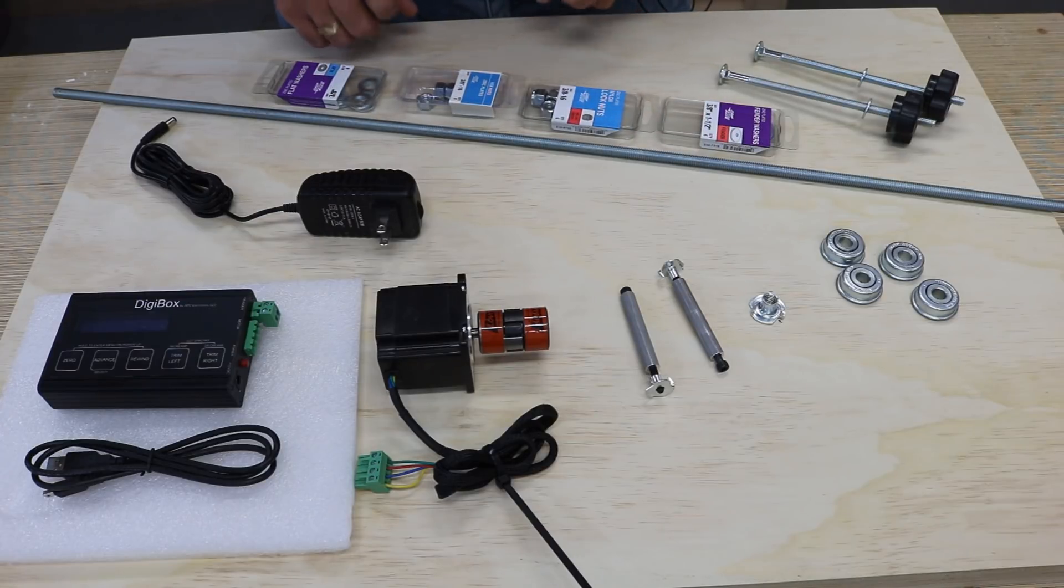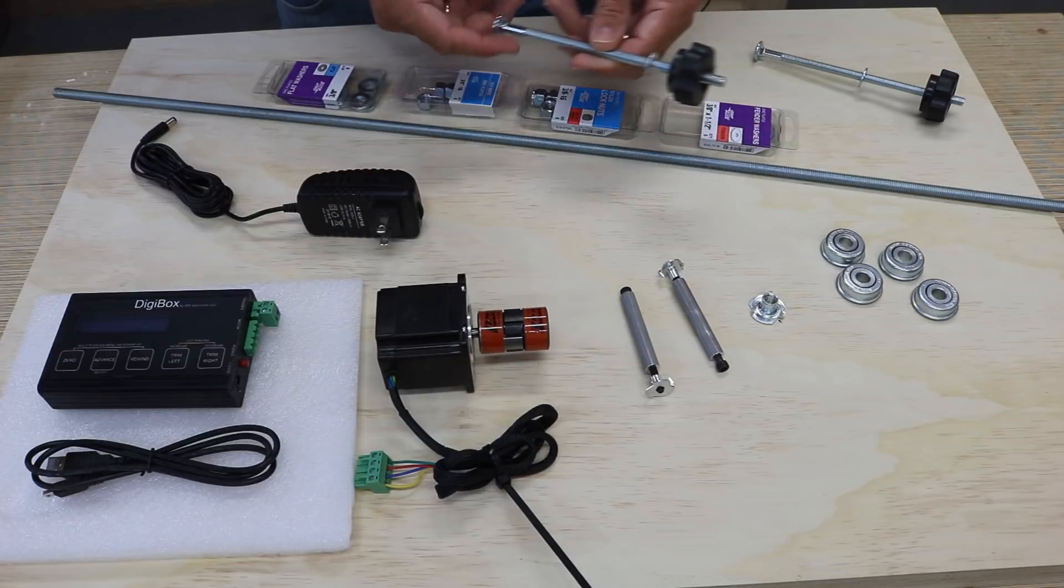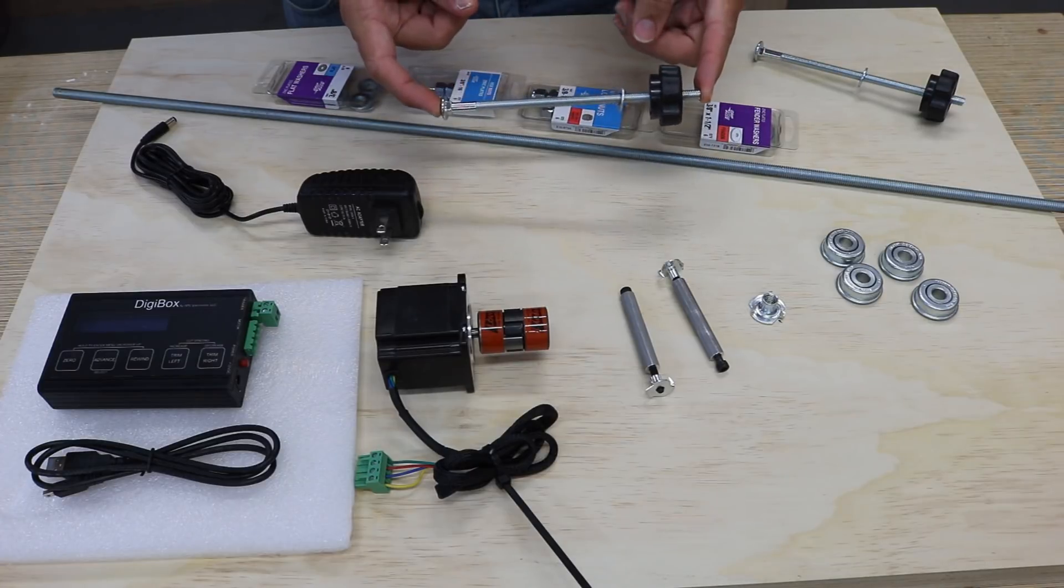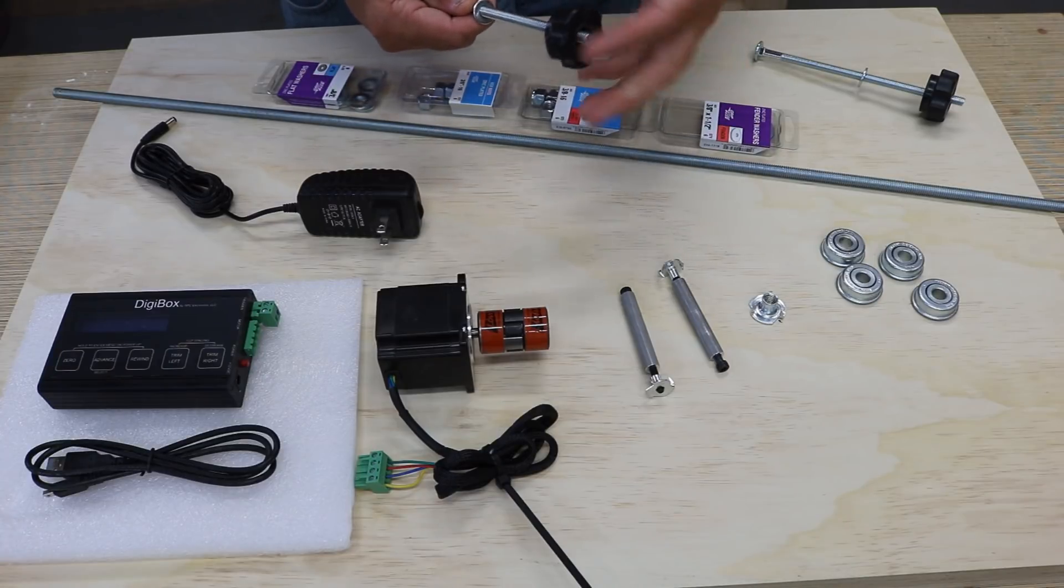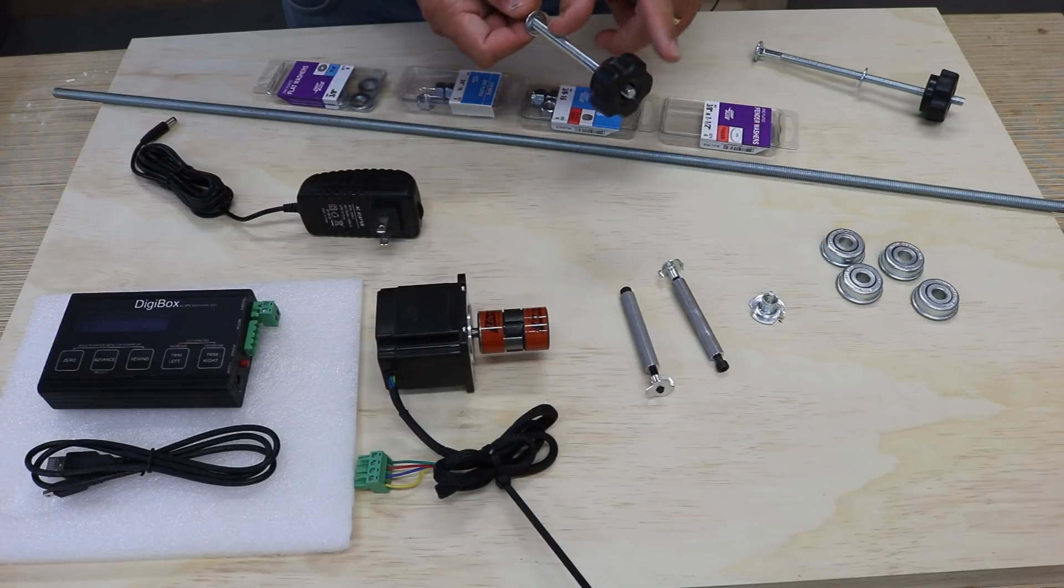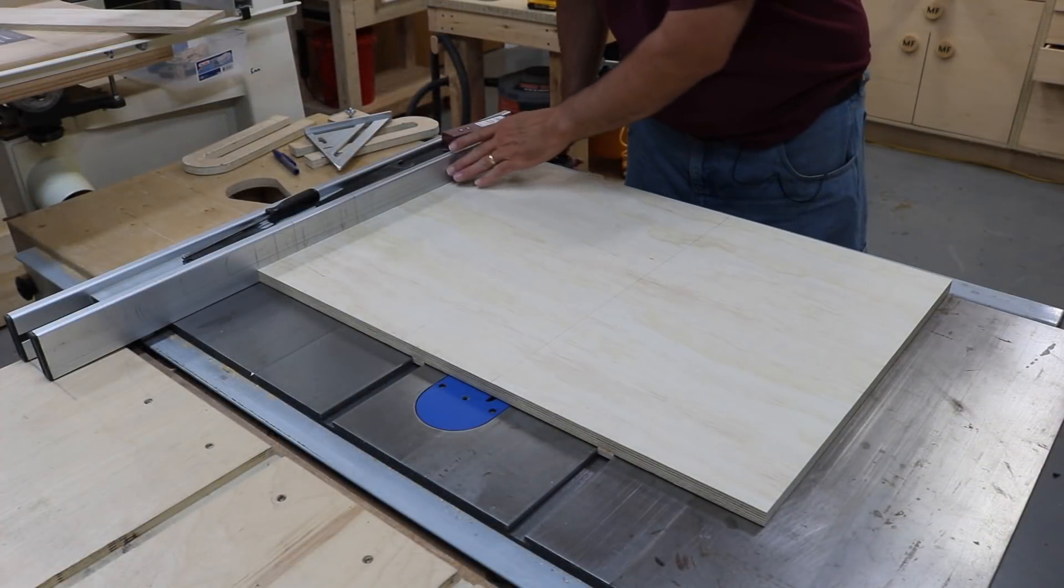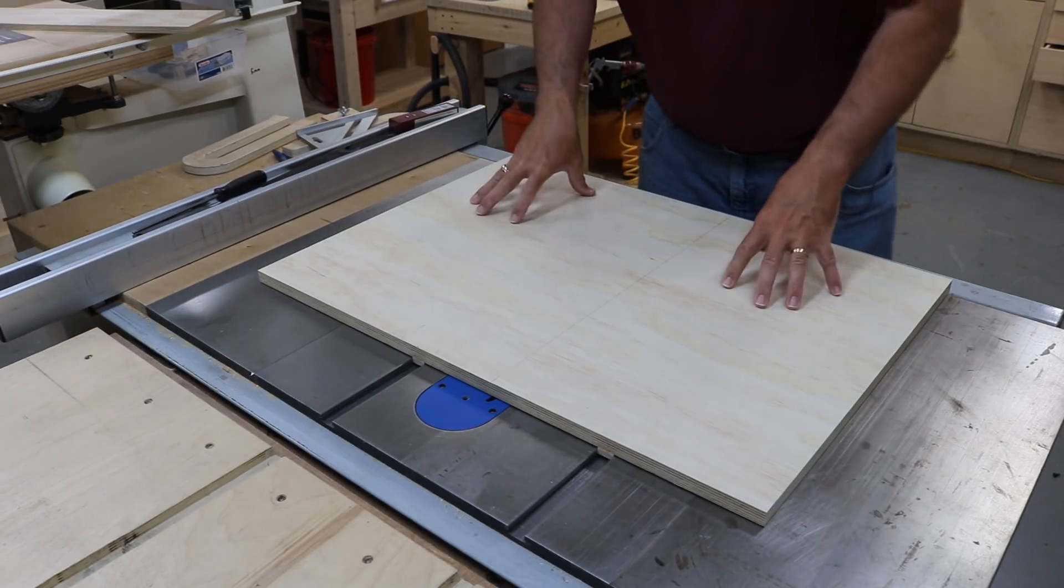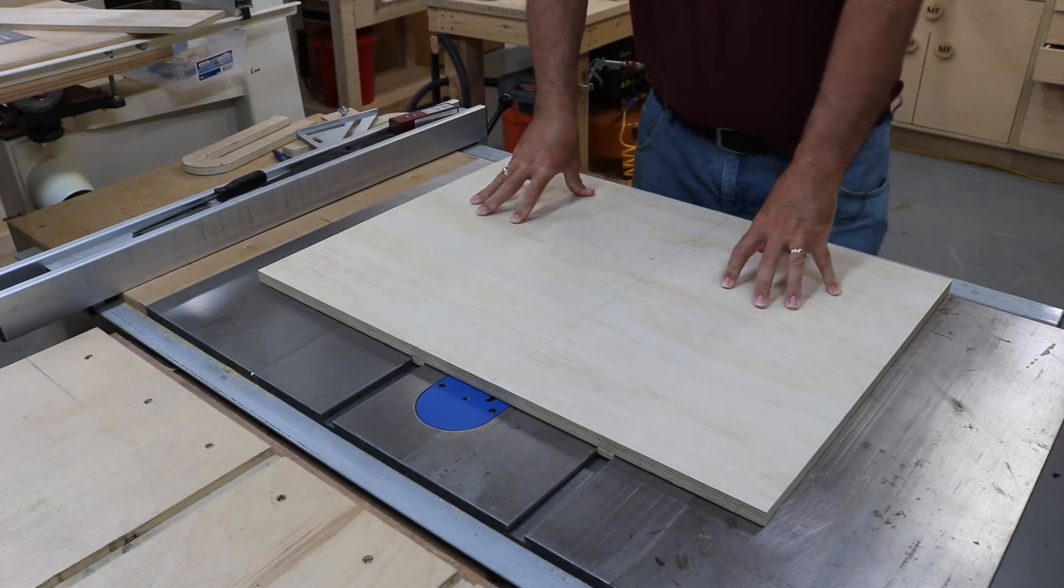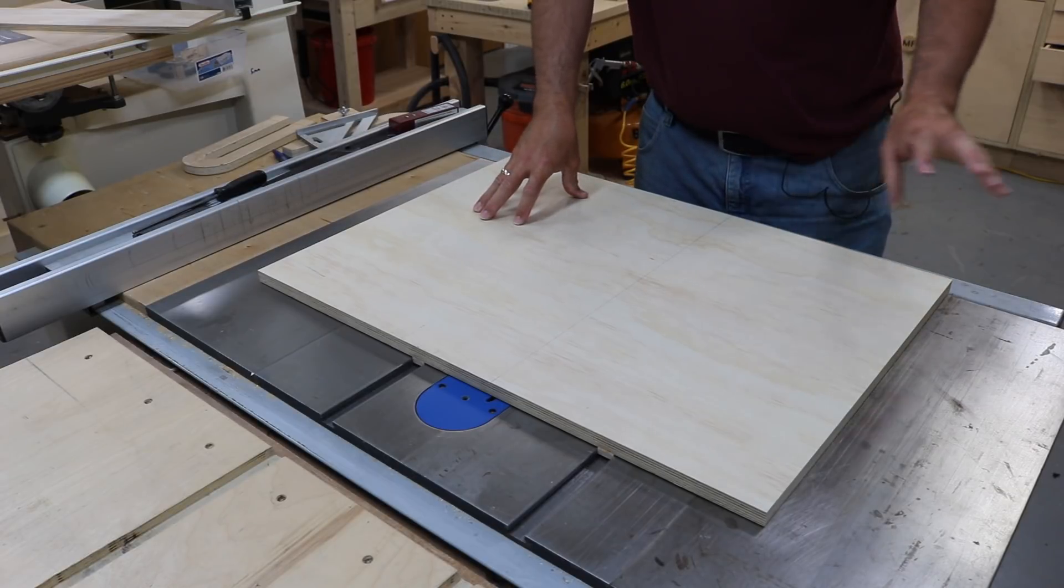One more thing you'll need is a carriage bolt. You need at least 5 inches long, and the knobs that go on the carriage bolts, just make sure that the bolt can go all the way through the knob. That is important later. One of the first differences I'm going to be doing is I'm going to mount everything to my sled, and my sled is going to fit into my cabinet.